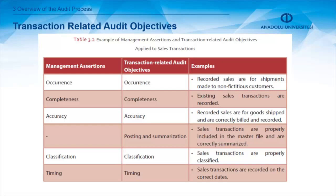These examples could be more than this — I just gave examples of management assertions and transaction-related audit objectives applied to sales transactions. It could be for every other transaction. I just want to give the idea of how we are creating transaction-related audit objectives and what kinds of evidences I am going to collect.